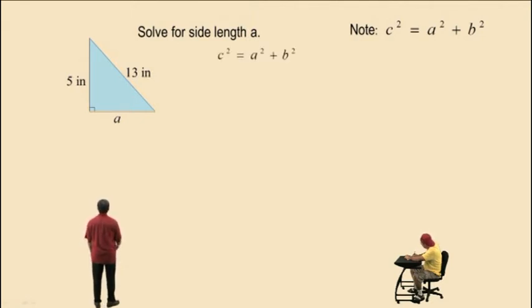So here we're asked to find the side length a, one of the legs. So there's our formula, c squared equals a squared plus b squared. We will replace c with the length of the hypotenuse, which is 13, the longest side length. And don't forget to square it.